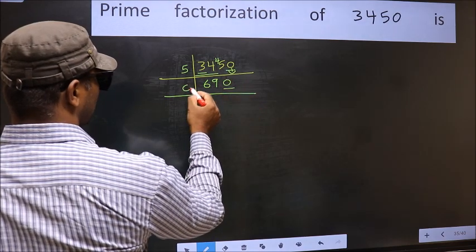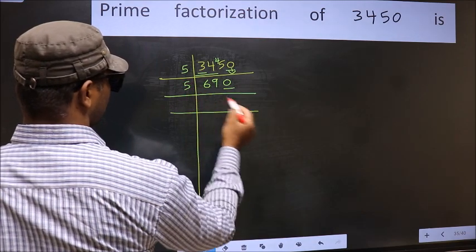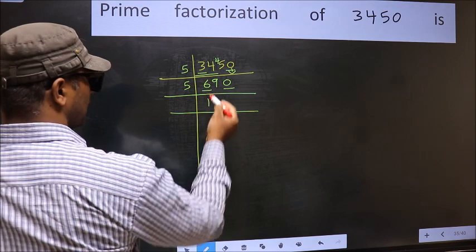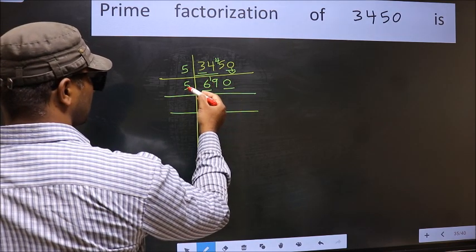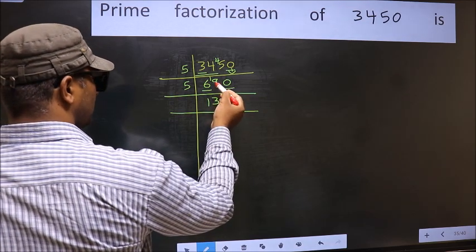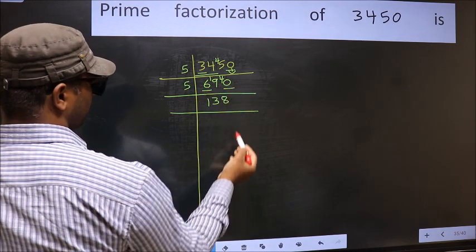Now last digit is 0, so take 5. First number 6. A number close to 6 in 5 table is 5 ones, 5. 6-5, 1, 1 carried forward 19. A number close to 19 in 5 table is 5 threes, 15. 19-15, 4, 4 carried forward 40. When do we get 40 in 5 table? 5 eights, 40.